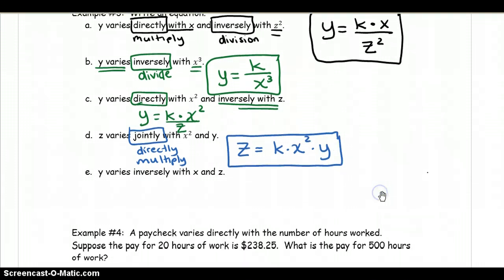Let's look at the last one. We have y varies inversely with x and z. So that's going to be k divided by x and z in the bottom. So it's inversely with both of them. Both of them should be dividing by the k value. That's our final answer.